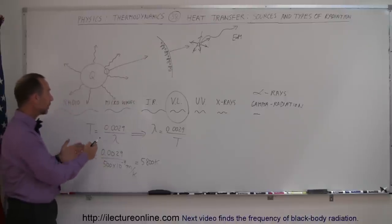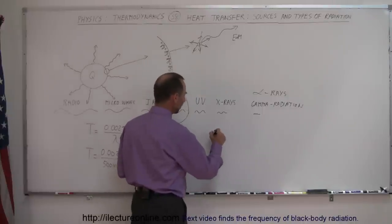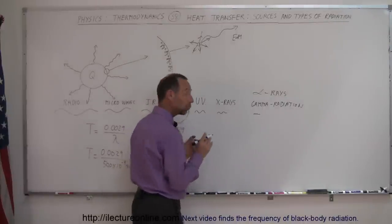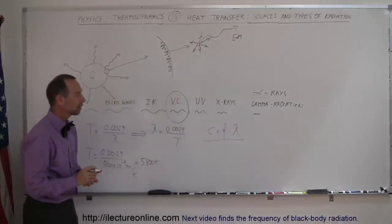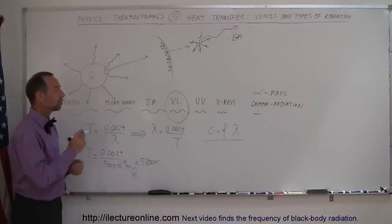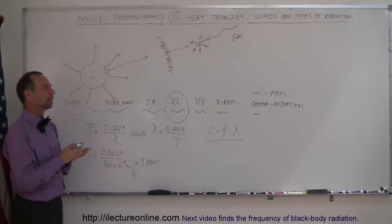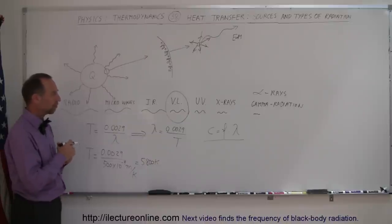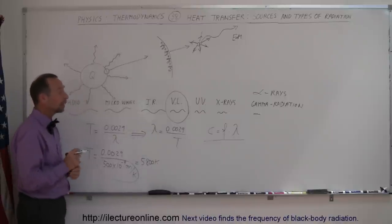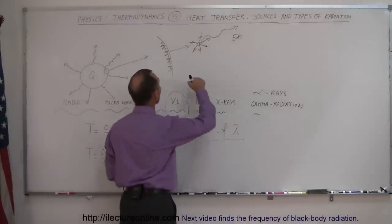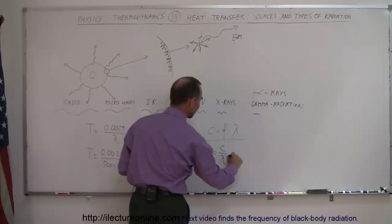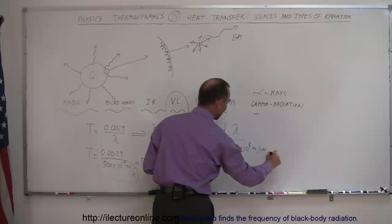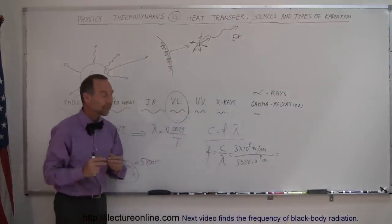Notice how wavelength and frequency are related to the speed of light: c equals frequency times wavelength. This is the standard wave equation, where for electromagnetic radiation the velocity is the speed of light. If we want to find the frequency of visible light with a wavelength of 500 nanometers, frequency equals the speed of light divided by wavelength — that's 3 × 10⁸ meters per second divided by 500 × 10⁻⁹ meters.